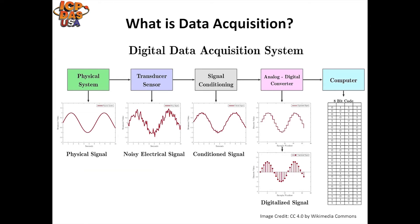Let's get down to basics. Data acquisition is the process of sampling signals that measure real-world physical conditions and converting the resulting samples into digital numeric values that can be manipulated by a computer. Data acquisition systems, abbreviated as DAQ, typically convert analog waveforms into digital values for processing.